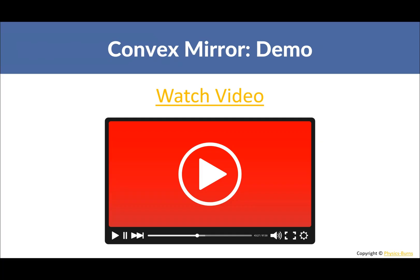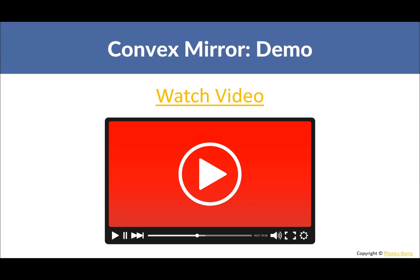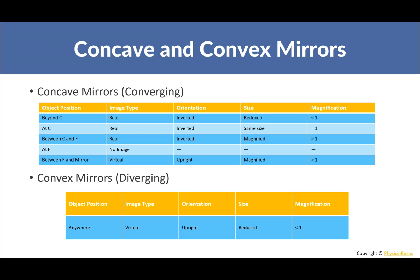There are some good demos showing concave and convex mirrors — highly suggested watching. Here is a summary of the types of images you'd get depending on object location. It's not required to copy but it's helpful to pause and review it.